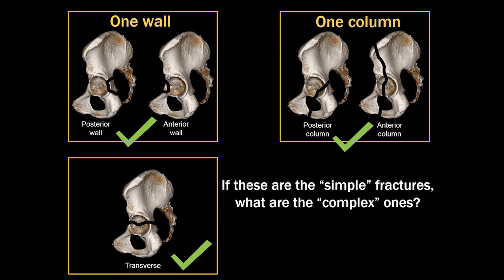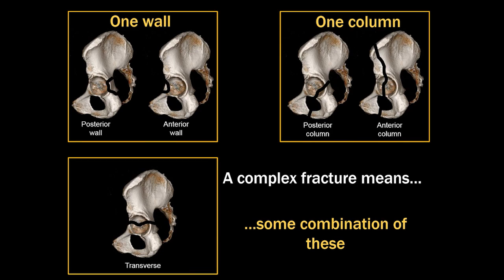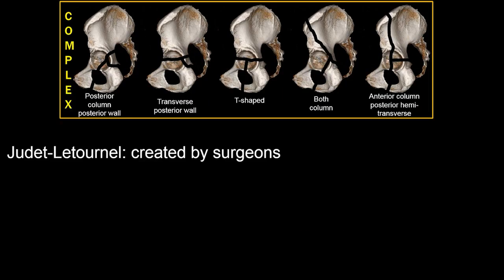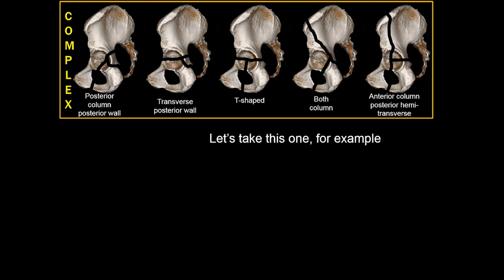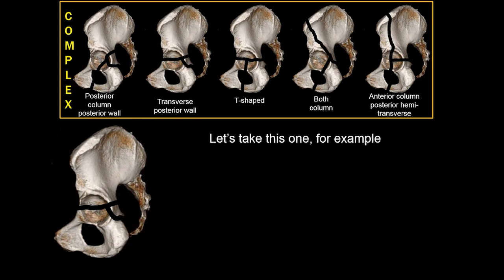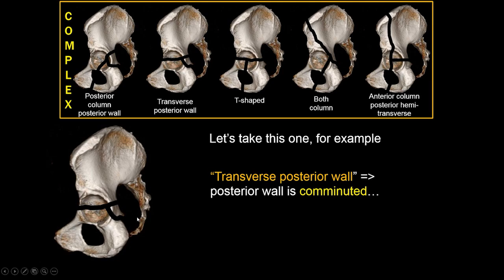A complex fracture is just some combination of the simple types you've already learned. The Judet-Letournel system was created by surgeons, so they won't describe a fracture separately unless it requires a separate surgery. For example, transverse with posterior wall means there is comminution of the posterior wall in addition to the transverse fracture line, requiring a separate surgery to fix it.